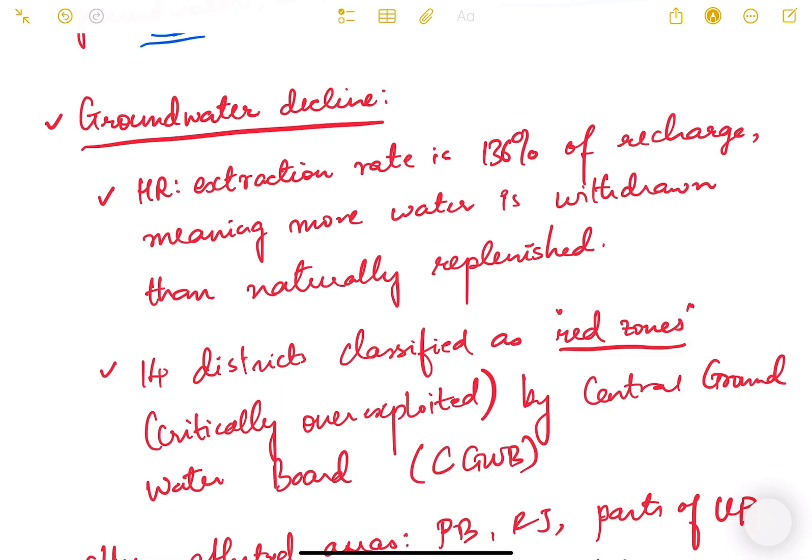In Haryana, the extraction rate is 136 percent of recharge. However much groundwater is getting recharged every year, Haryana state is extracting 136 percent of it—more water is withdrawn than naturally replenished, so obviously the water table will fall.